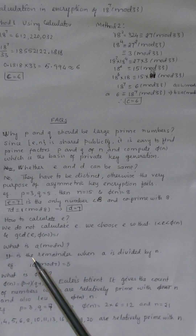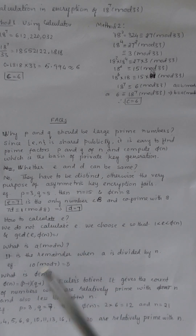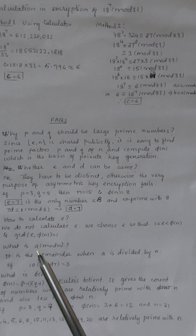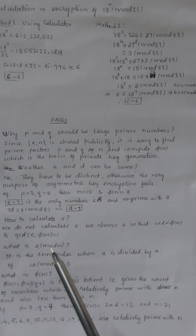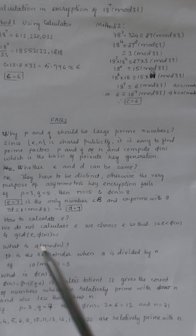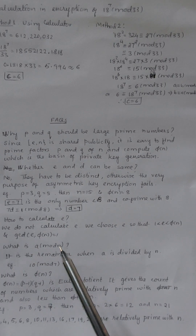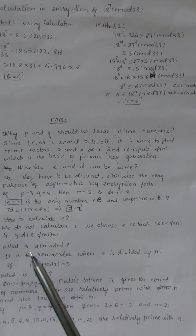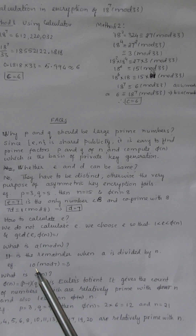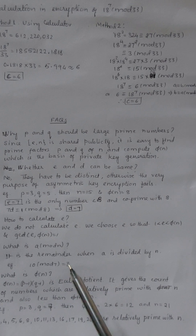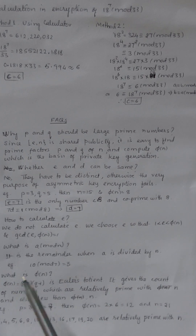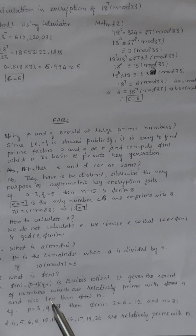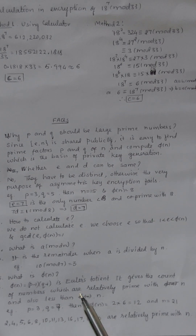RSA algorithm requires the concept of modular arithmetic. The meaning of a mod n is the remainder when a is divided by n — for example, 10 mod 7 = 3. Also, phi(n), the Euler's totient function, gives the count of numbers less than n that are relatively prime with n.